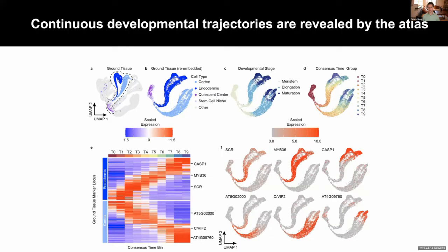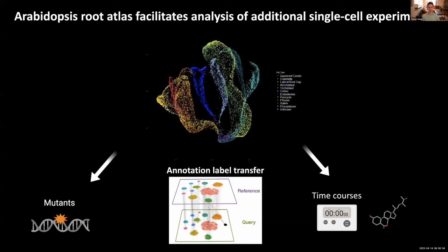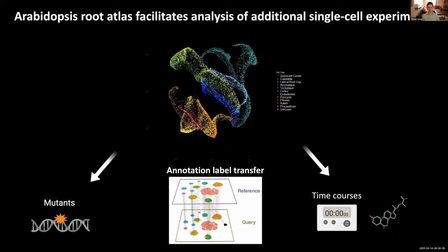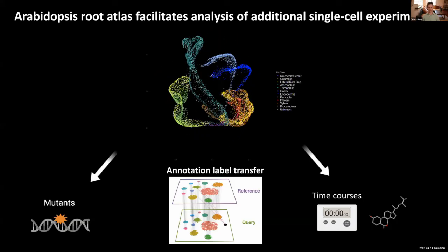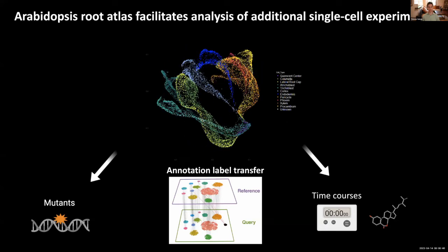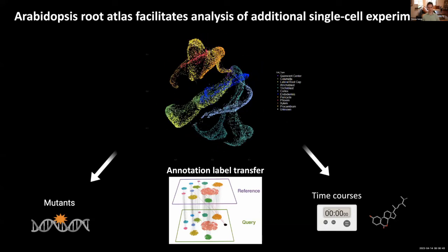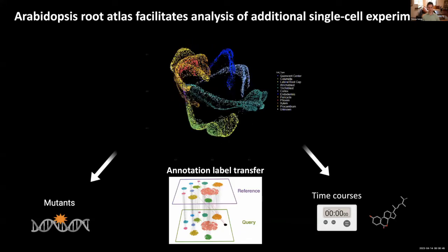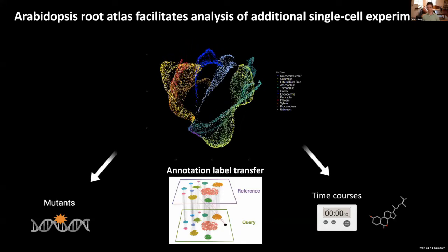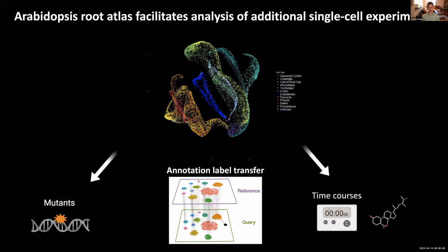We can also identify new things — for example, the marker Cbif2 is an elongating cortex marker that's become important for my own work. Now that we have this atlas, rather than redoing the experiment fresh, we can use it as a resource to annotate new datasets and inform which cell types and developmental stages are present, so we can look at mutants or at stimuli such as bioperforming time courses.